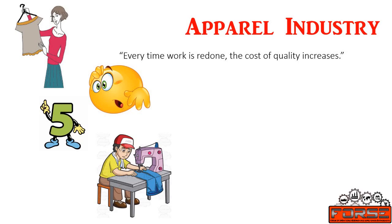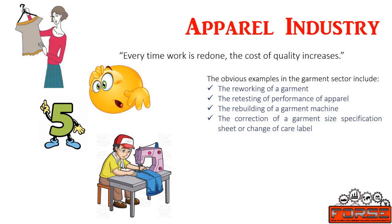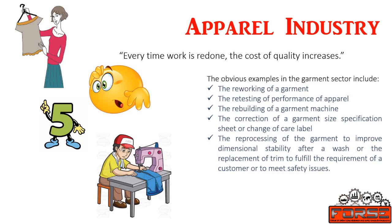The obvious examples in the garment sector include the reworking of a garment, the retesting of performance of apparel, the rebuilding of a garment machine, the correction of a garment size specification sheet or change of care label, the reprocessing of the garment to improve dimensional stability after a wash, or the replacement of trim to fulfill the requirement of a customer or to meet safety issues, and many more.